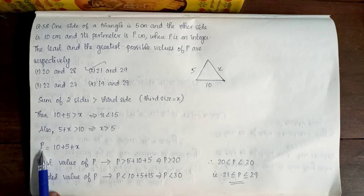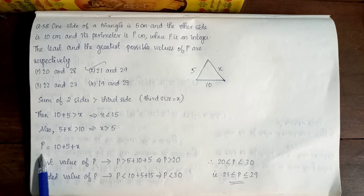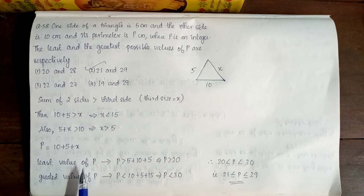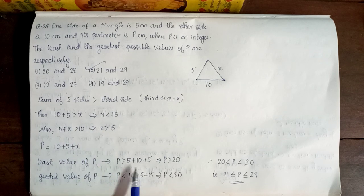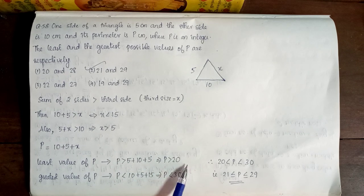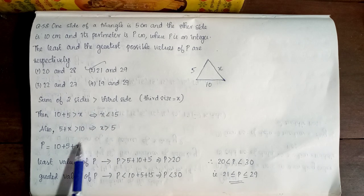Now I have the length of a triangle and the sum of its sides. So, p is equal to 10 plus 5 plus x. Least value of p is greater than 5. So, I will get p is greater than 5 plus 10 plus 5. So, this implies p is greater than 20. Greatest value of p is greater than 20. So, I will get the inequality substitute here.